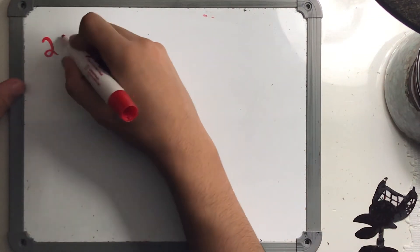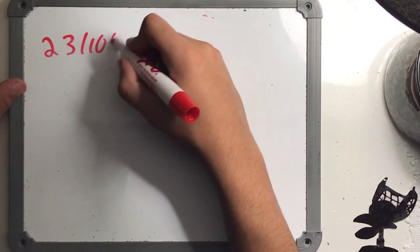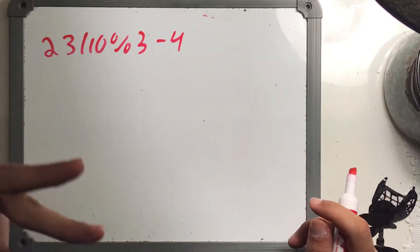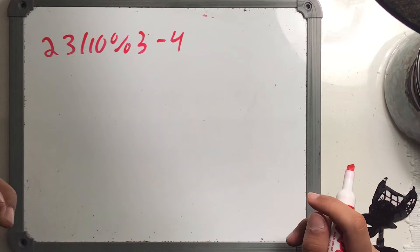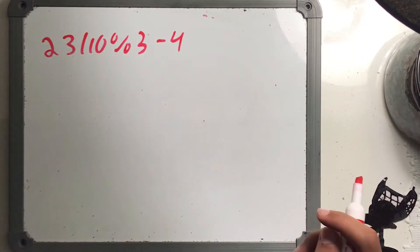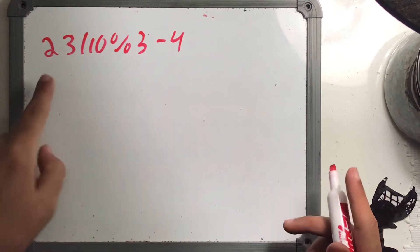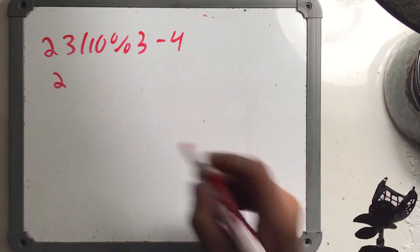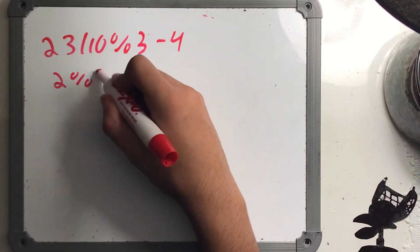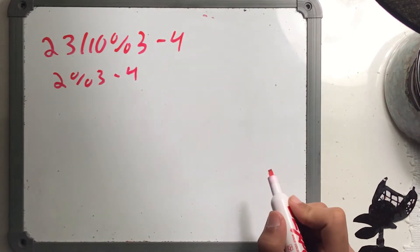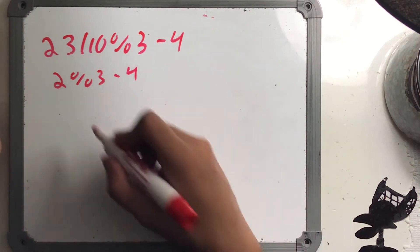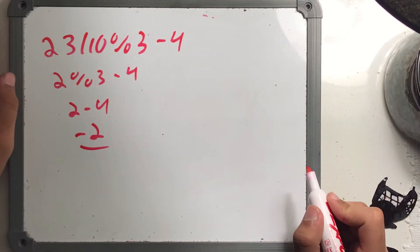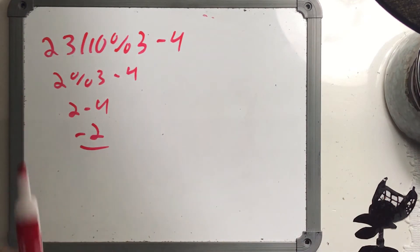Another example: 23 / 10 % 3 - 4. Multiplication, division, and modulus all have equal precedence, so evaluate left to right. 23 / 10 = 2 (integer division). Then 2 % 3 = 2 (2 divided by 3 is 0 remainder 2). Then 2 - 4 = -2. The answer is -2.